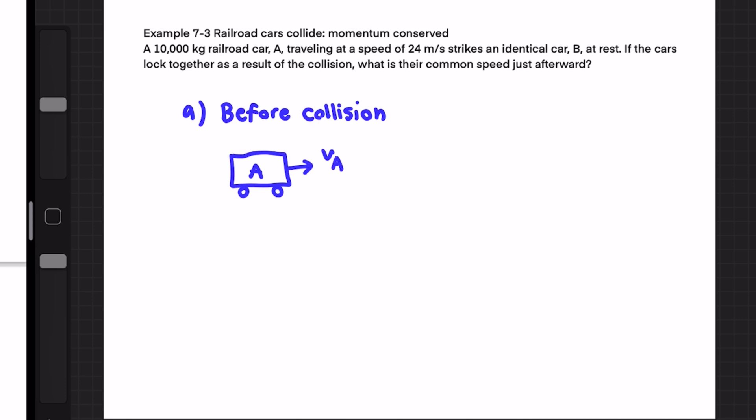Meaning that the speed of car B is at 0 or v is at 0. But car A, v is at 24 meters per second.